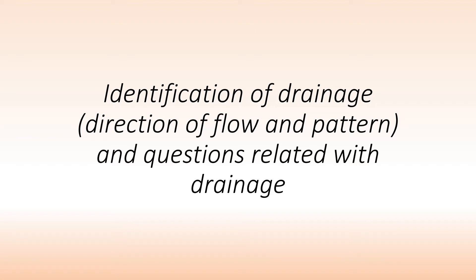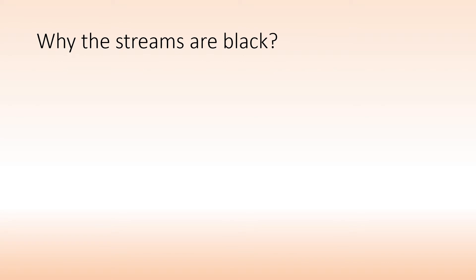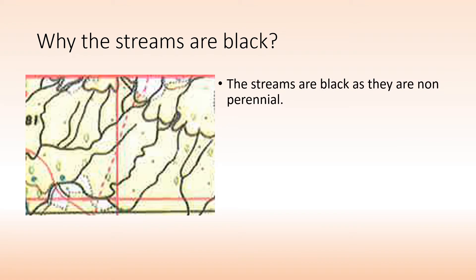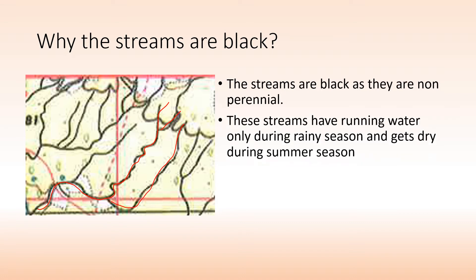In this class we will learn about the direction of flow and pattern of rivers, and questions related with drainage or rivers. Why are streams black? In topographic maps, streams are single lines which are black in color because they are non-perennial — they do not have water throughout the year. Streams have running water only during the rainy season and get dry during summer season.